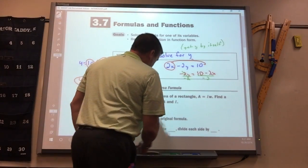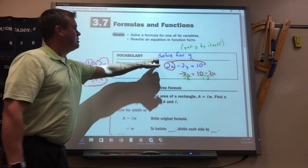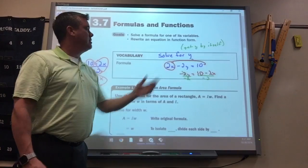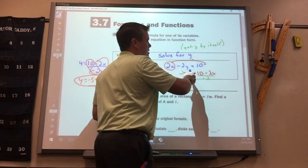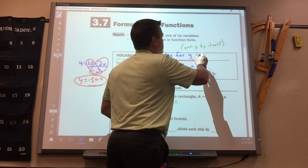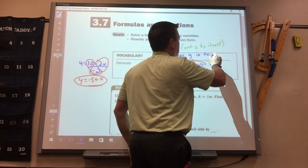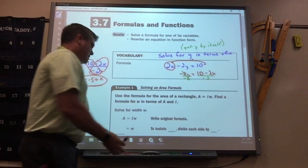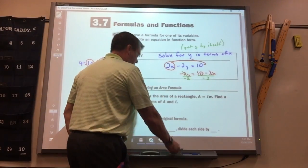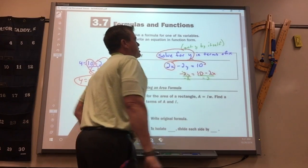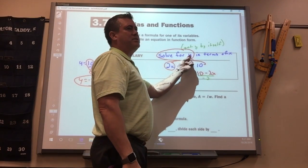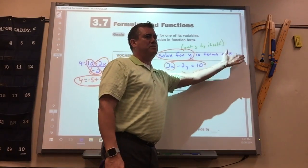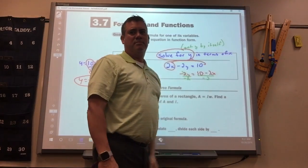Now, one other thing they add to the directions. A lot of times, if you don't know what they're asking for, it's hard to do. If you know what they're asking, it's easy. When they say solve for y, that means get the y by itself. And sometimes, they add this. In terms of x. All that means, it means the same exact thing. They're just telling you that you're going to get the y by itself on one side and the x on the other side. So when they say in terms of something, that just means that's the other letters.